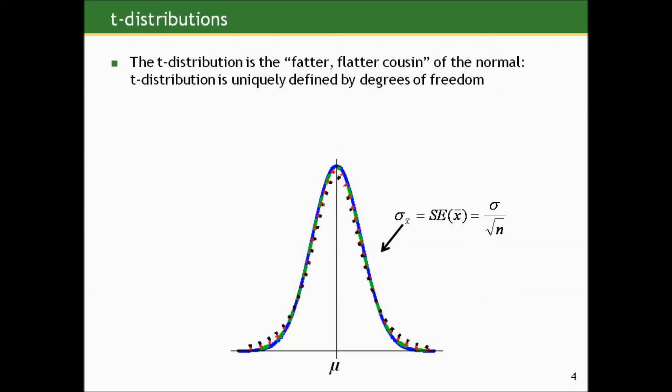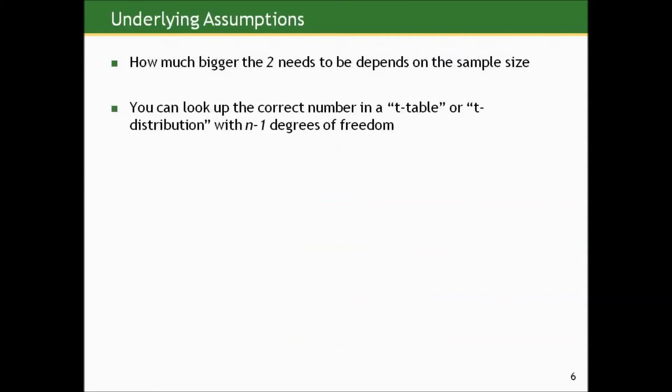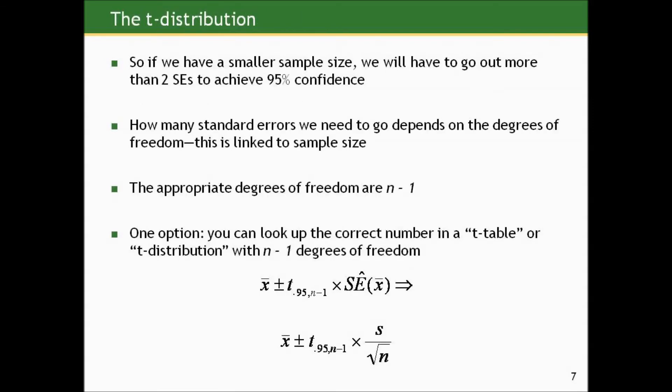To account for that additional uncertainty in what we're using to estimate variability in the sample means, we have to go slightly more than two standard errors under our sampling distribution to get 95% coverage, and more than three standard errors to get 99% coverage. So we just have to be a little more conservative. The idea and logic are exactly the same if we trace it through the T curve as we did with the normal, but we need to add and subtract slightly more. How much bigger we need to go beyond two depends on the sample size. The degrees of freedom for the appropriate T curve are directly linked to the sample size — for a confidence interval for a single mean, degrees of freedom is n minus 1.